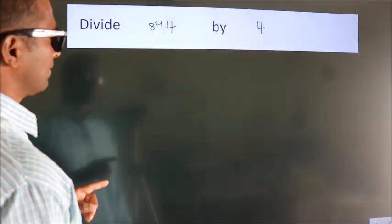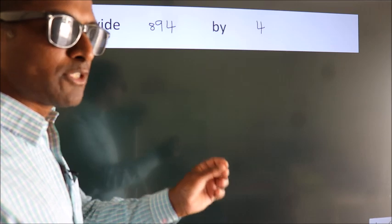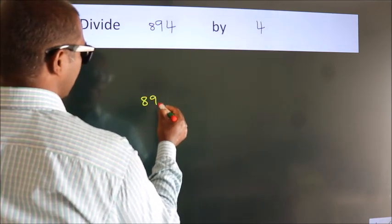Divide 894 by 4. To do this division, we should frame it in this way: 894 here, 4 here. This is your step 1.